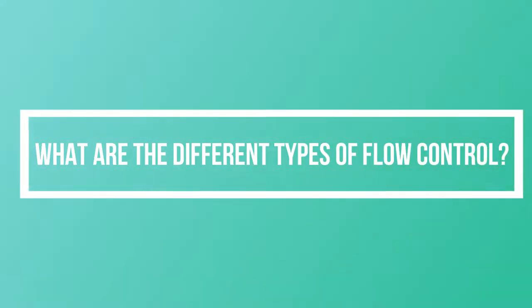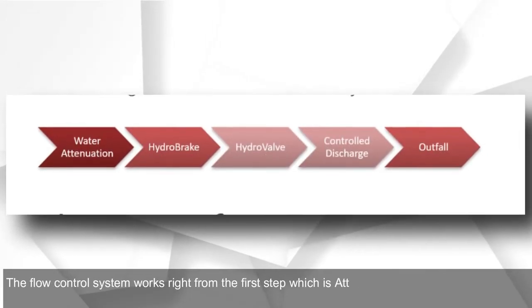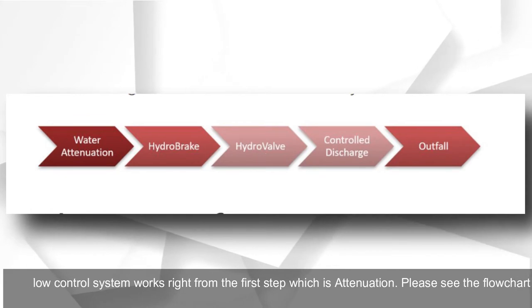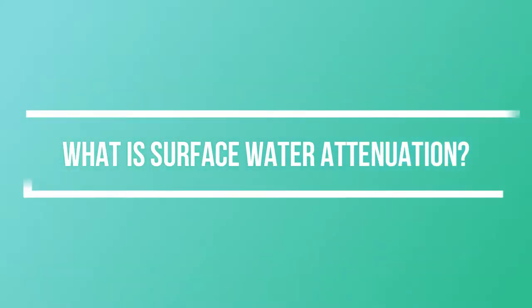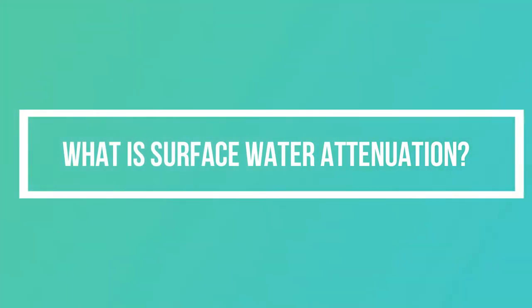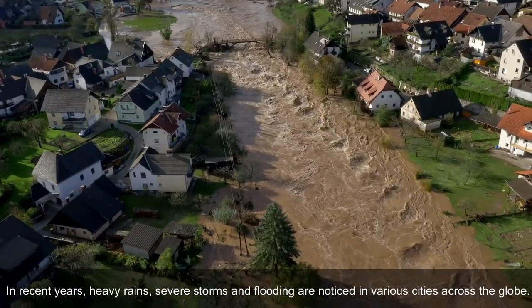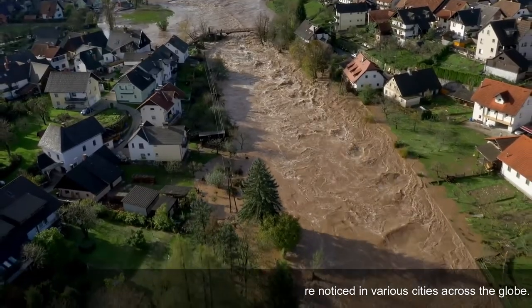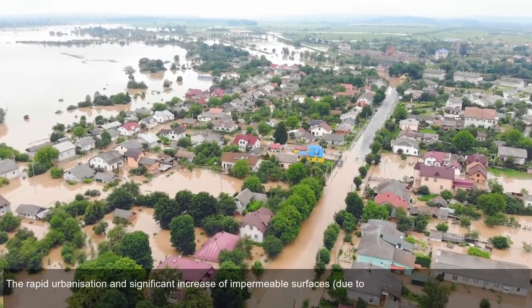What are the different types of flow control? The flow control system works right from the first step, which is attenuation. Please see the flow chart. What is surface water attenuation? In recent years, heavy rains, severe storms, and flooding are noticed in various cities across the globe.